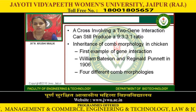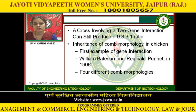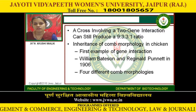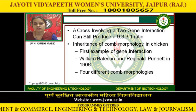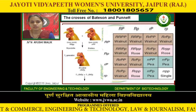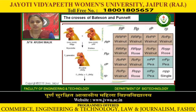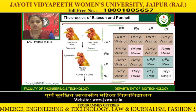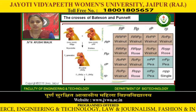Inheritance of comb morphology in chickens was the first example of gene interaction, studied by William Bateson and Reginald Punnett in 1906. There are four different comb morphologies. The F2 generation consists of chickens with four types of comb: 9 walnut, 3 rose, 3 pea, and 1 single.